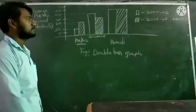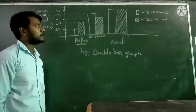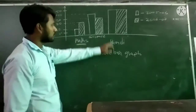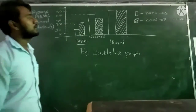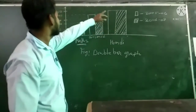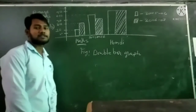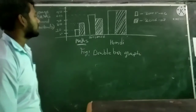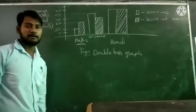In the case of Hindi, during the session of 2005-06, the average marks was 50. And during the session of 2006-07, the average marks of Hindi was also 50. So both the years the average marks in Hindi were the same. This type of information can be represented in double bar graphs.